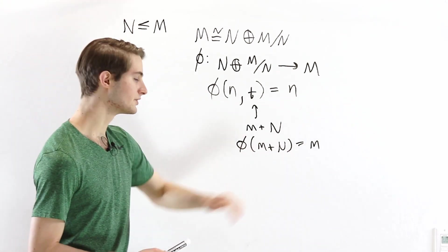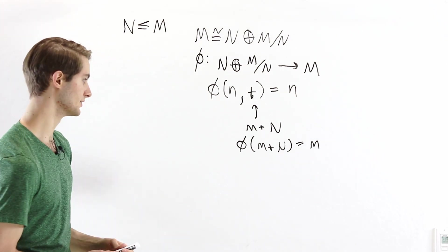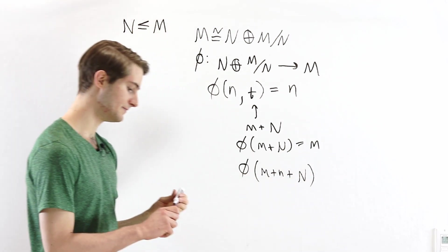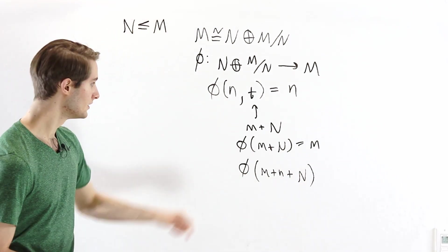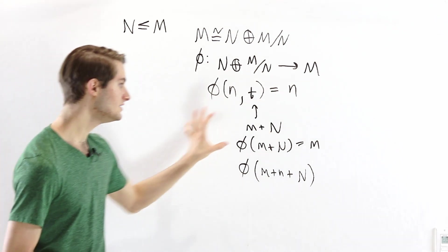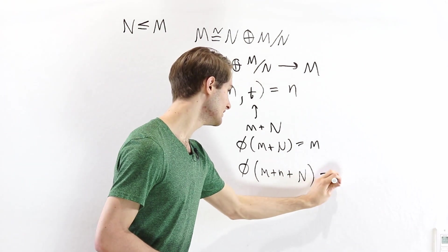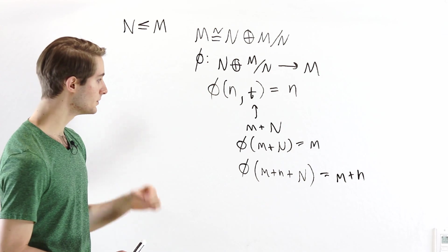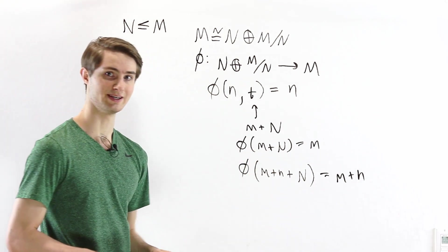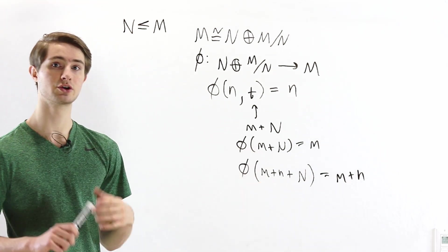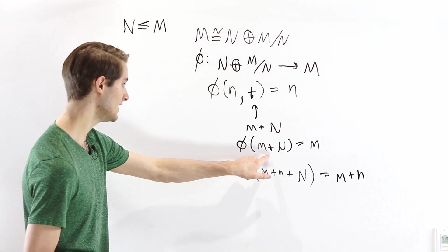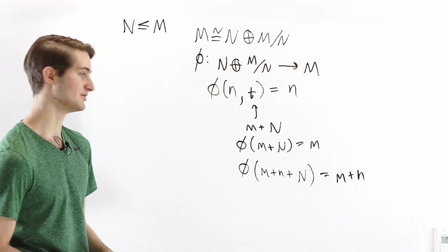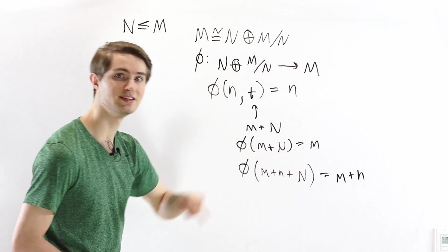The problem is, when we do this, we are implicitly choosing a coset representative. There's another coset that's the exact same — m plus n plus N, where n is any element in the sub-module. These two are the same set, so they need to map to the same thing, but we can't say one maps to m and the other to m plus n — that gives two different outputs for the same input. So we need to figure out which coset representative we're going to send. These are called coset representatives; they both represent the same coset m plus N.